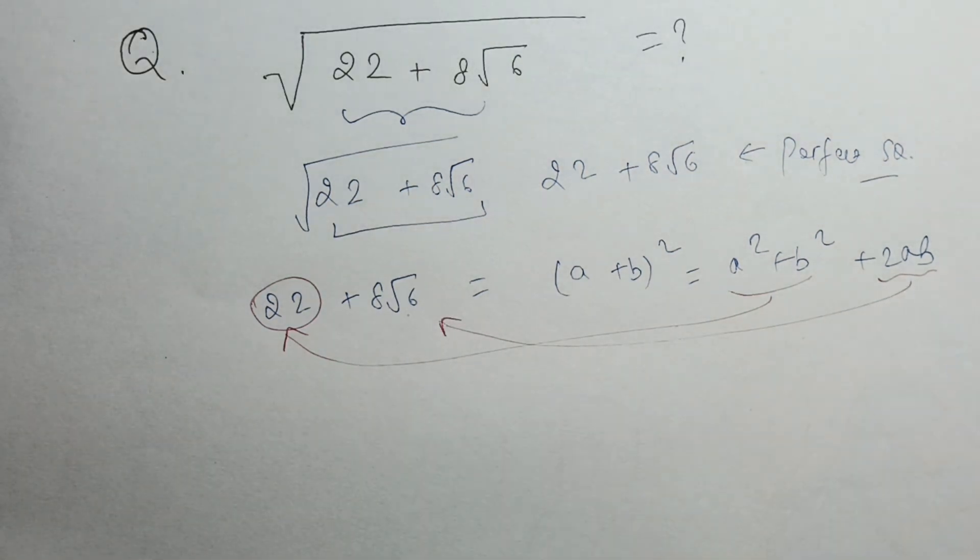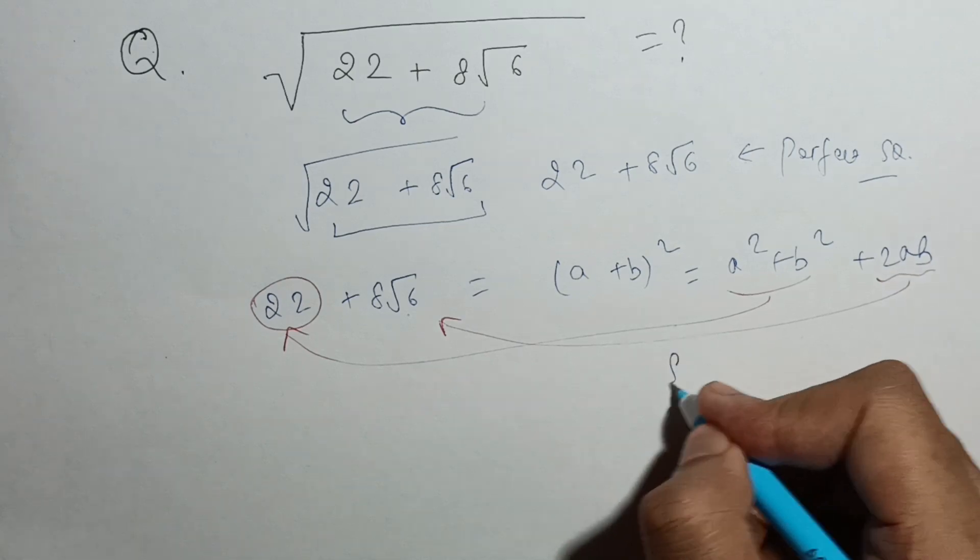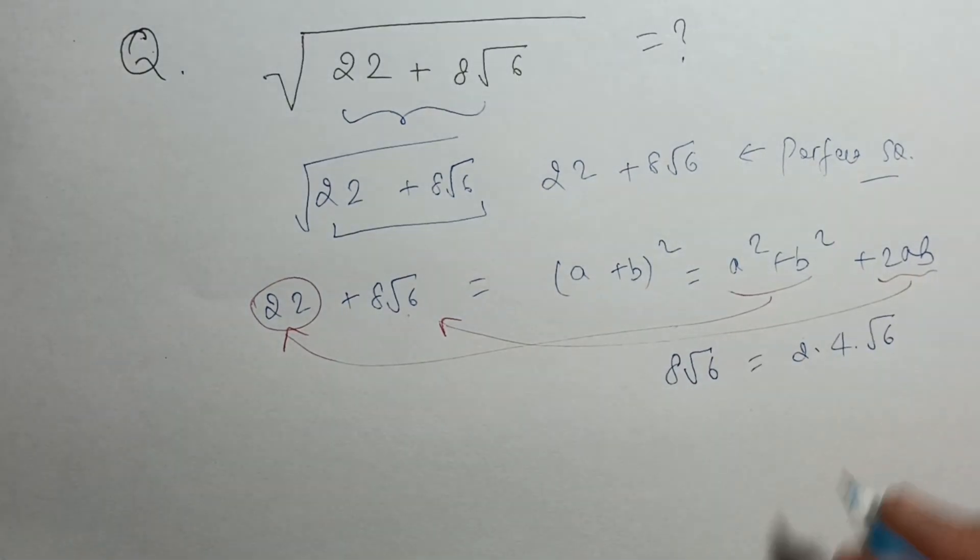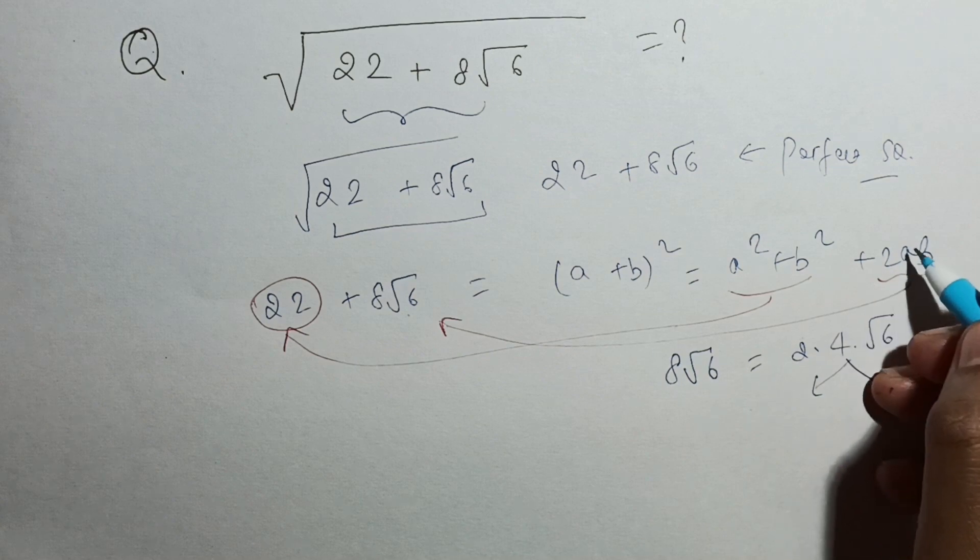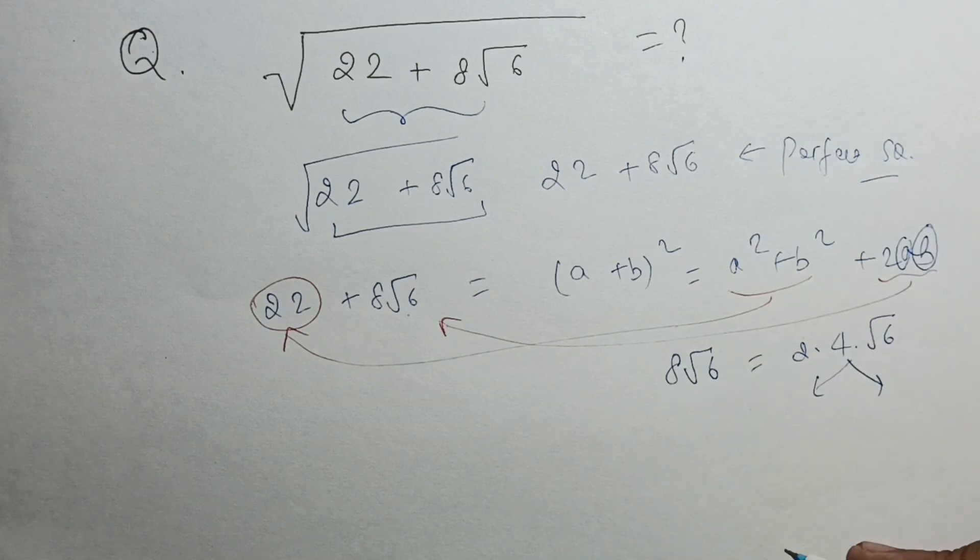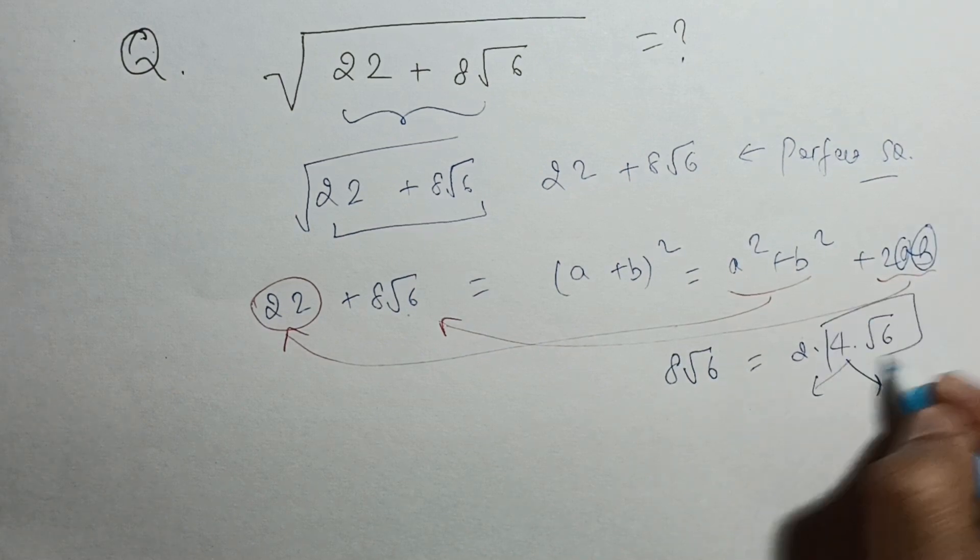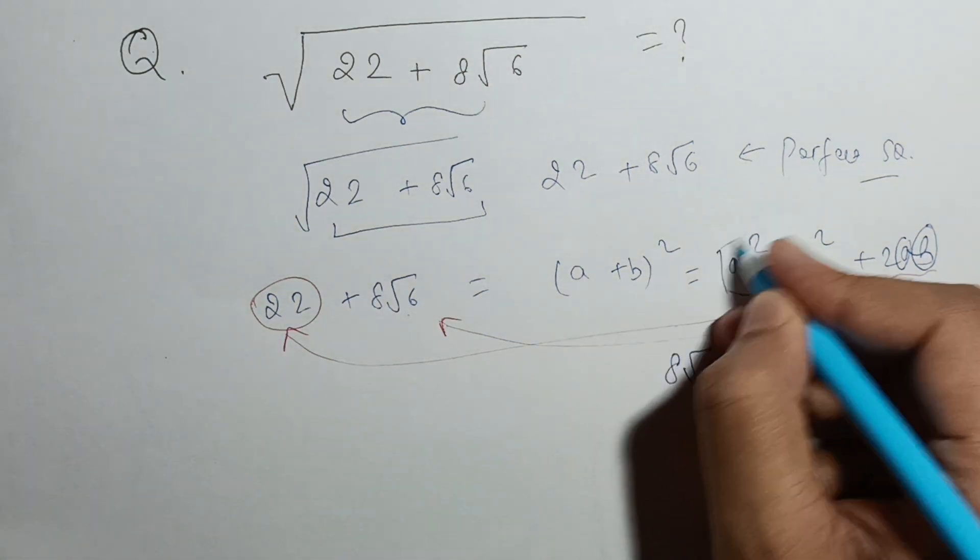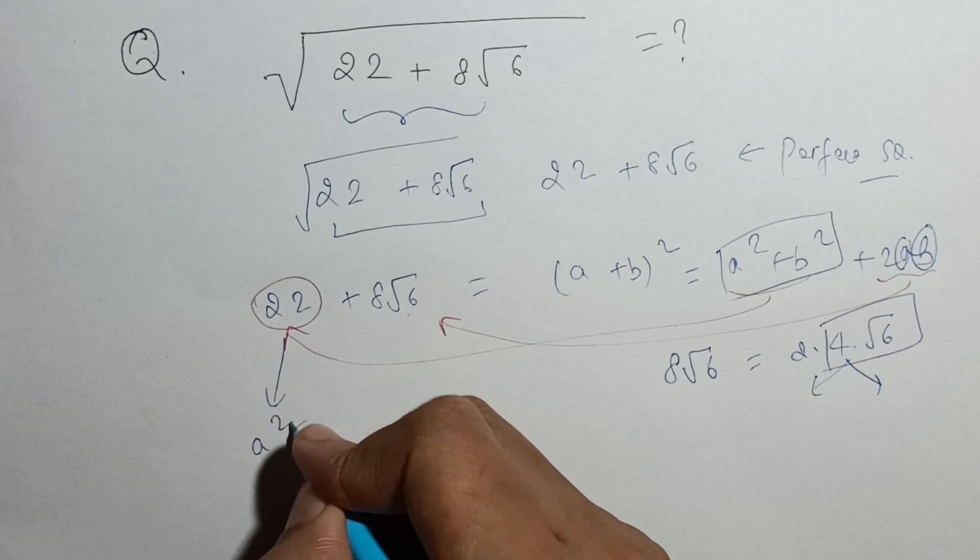So let us write 8 root 6 in the format of 2ab. So 8 root 6 can be written as 2 times 4 root 6. Now here I want two numbers a and b such that their product is 4 root 6 and their sum of squares, that is a squared plus b squared.